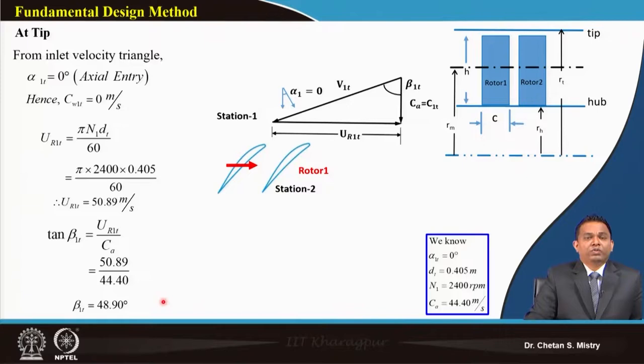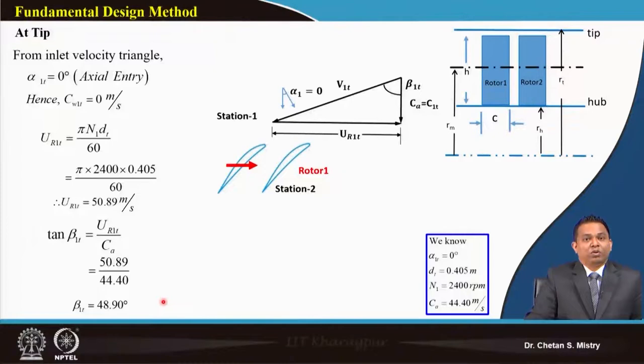In line with the hub calculations, we can also do calculation at the tip station, which will be discussed in the next lecture. To summarize today: we completed all mid station calculations for rotor 1 and began hub station calculations. Next session will cover the tip station, iterating and adjusting these numbers, and then starting the design of rotor 2.